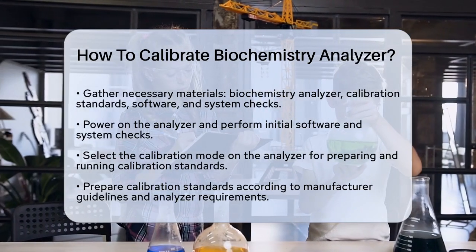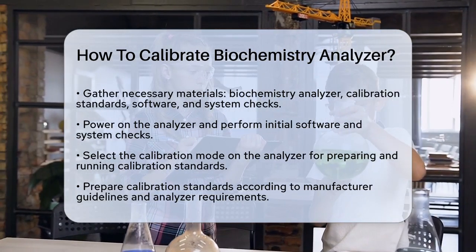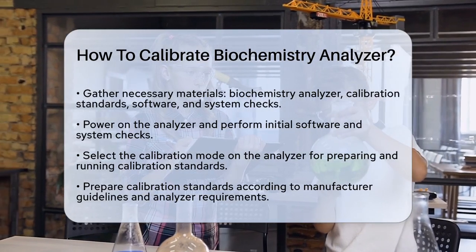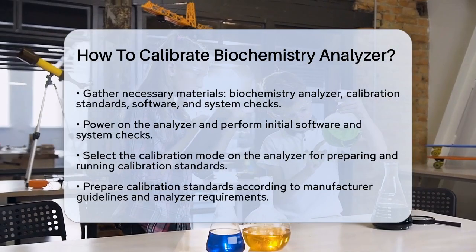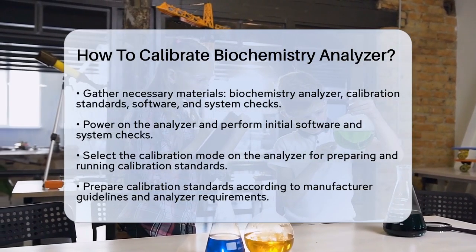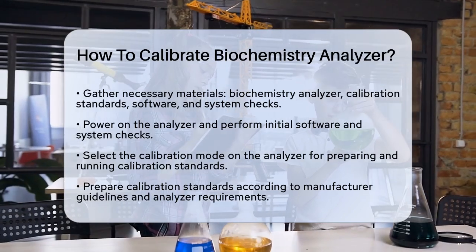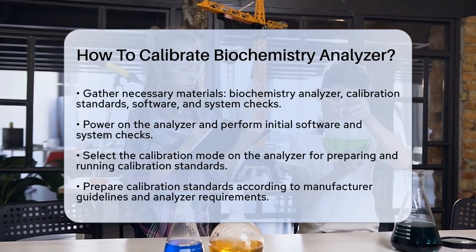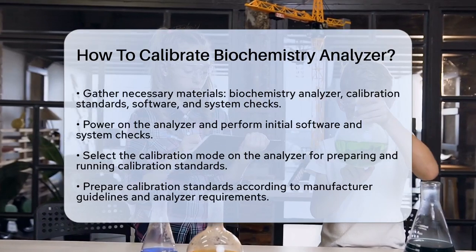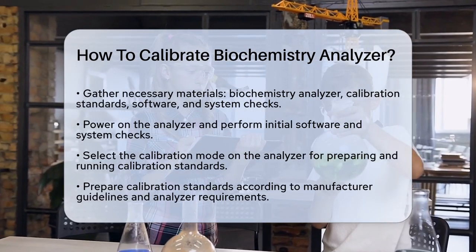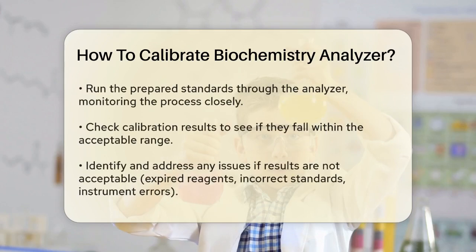Next, select the calibration mode on your analyzer. This mode allows you to prepare and run the calibration standards. These standards are reference materials with known concentrations of analytes that help set the accuracy of the analyzer. Prepare these standards according to the manufacturer's guidelines and the specific requirements of your analyzer.